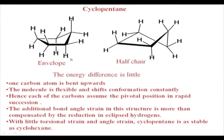Cyclopentane exists in two types of conformations: the envelope and the half chair. In the envelope, four carbon atoms are in a plane and one carbon is up — this is the flap of the envelope. That flap carbon is not fixed; it goes down and the next carbon goes up, so the tip of the flap oscillates between all carbon atoms in the cyclopentane.